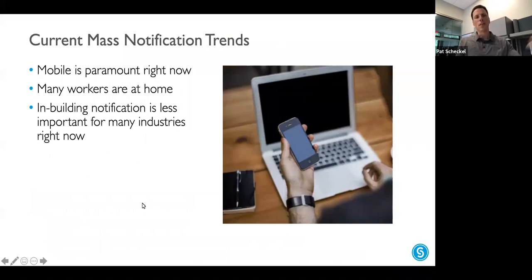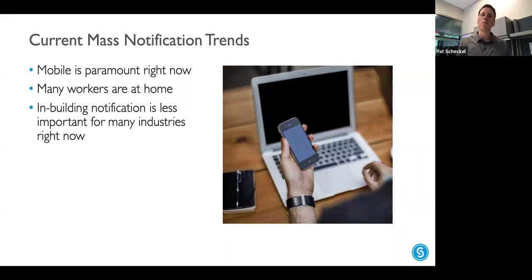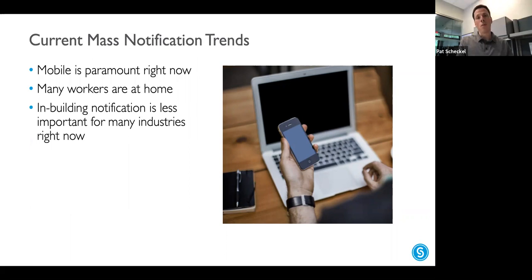Summarizing the mass notification trends we're seeing: mobile is paramount right now. So many people are working from home that it's really important to reach remote workers. That means in-building notification at this very moment is a little less important than it was in the past — and we do in-building notification very well through a variety of methods. But you do want to keep that in the back of your mind because we'll exit the pandemic and you'll want really effective in-building notifications, since mobile won't reach everybody as quickly as you'd like.